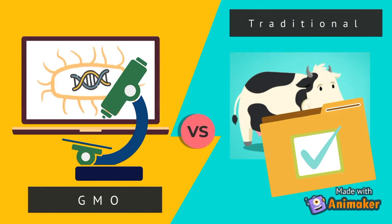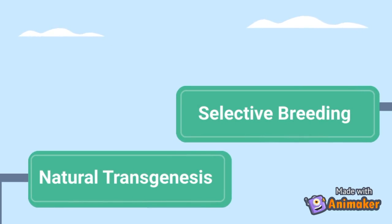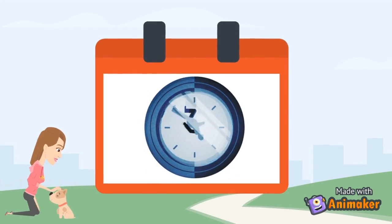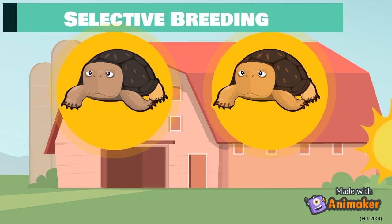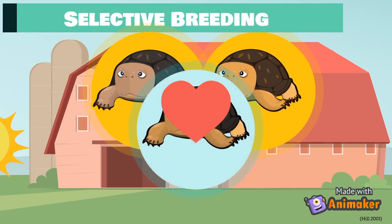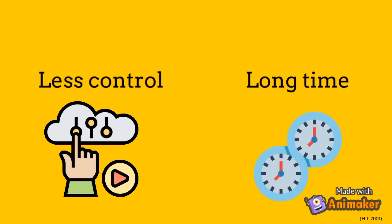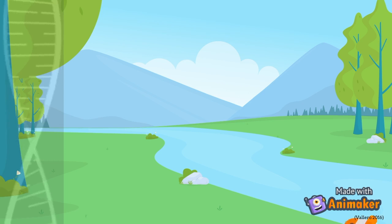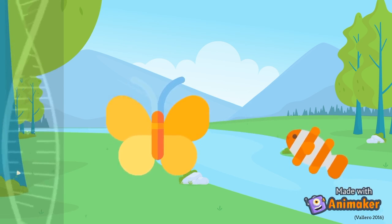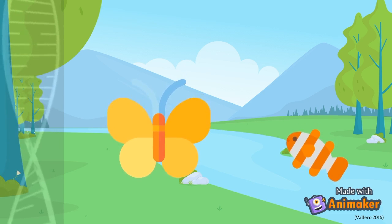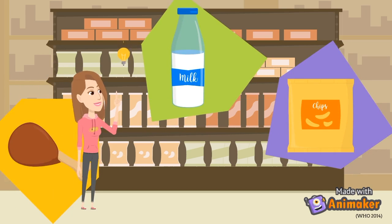First, let's take a look at the difference between traditional techniques and GM techniques. The most well-known traditional technique is selective breeding, but there's also natural transgenesis. Both of these have been used for a very long time. Selective breeding is the process of selecting two animals or plants that express a desired trait and forcing them to reproduce in the hope that the offspring express that desired trait to a greater extent. This is a long process spanning generations with less control compared to genetic engineering, which allows individual desired genes to be transferred from one organism to another. This can be called cisgenetic or transgenetic, depending on if the gene came from the same organism or a different one. Food products created using these organisms are referred to as GM foods, or genetically modified foods.